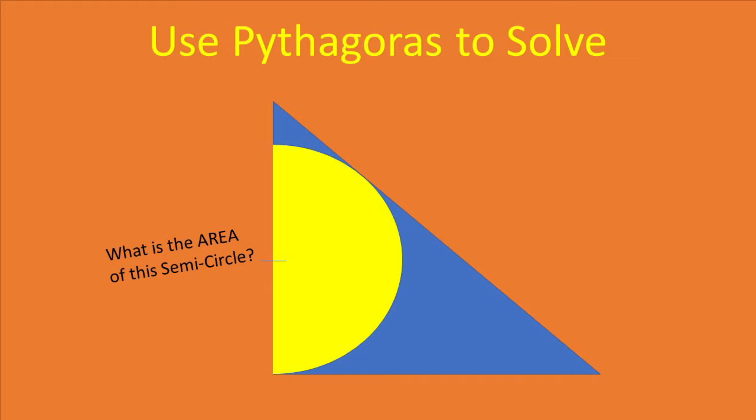In order to calculate the area of this circle, we need to first compute the radius. Another hint that I want to give is that you can use the Pythagoras theorem here.